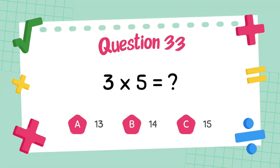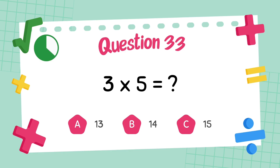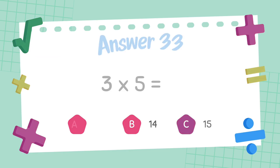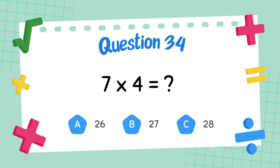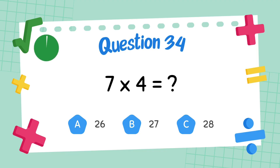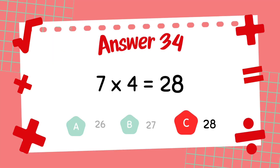What is 3 multiply 5? The answer is 15. What is 7 multiply 4? The answer is 4. The answer is 28.